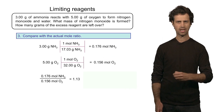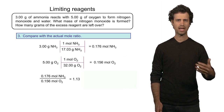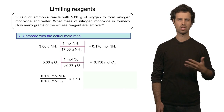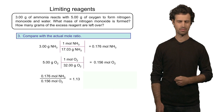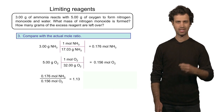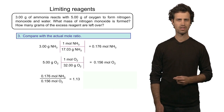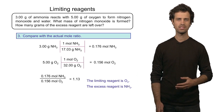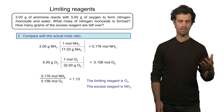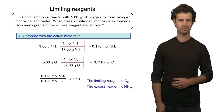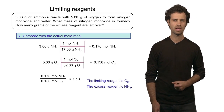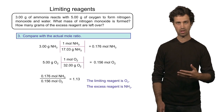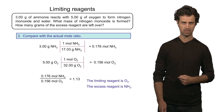1.13 is larger than 0.8, which was the balanced mole ratio. So the actual mole ratio is larger than the balanced mole ratio. We know that under these conditions the denominator is the limiting reagent, so in this case that is oxygen. That means that the other reagent, ammonia, is the excess reagent. Once we know the limiting reagent, we can calculate the amount of product formed and also how much of the excess reagent is left.